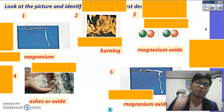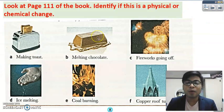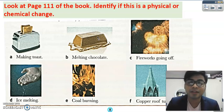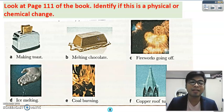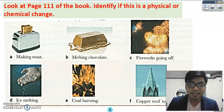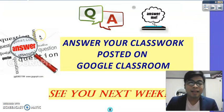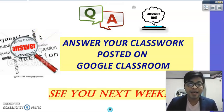Now I want you to look at page 111 of your course book and identify whether each example is a physical or chemical change. We won't be tackling it here since we covered it in the last discussion, so hit the pause button and try to identify whether each one is a physical or a chemical change.